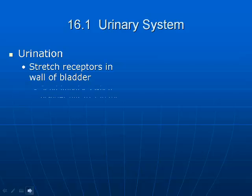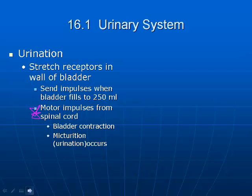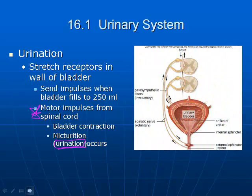When the stretch receptors in the bladder are stretched to a certain point, they signal the brain via a motor impulse. This triggers the bladder to contract — a process called micturition, which basically just means urination. You don't need to know the detailed nervous response for this unit; we'll cover that in the next unit on the nervous system.